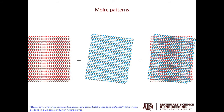Extending from one-dimensional lattice fringes to two-dimensional lattice patterns, moiré fringes will evolve into moiré patterns. The example is from Xiaodong Xu's group, and they were looking at bilayer graphene. If you rotate one layer against another, you will create these beautiful moiré patterns. By measuring the spacing of the moiré patterns, you can work out the rotational angle.